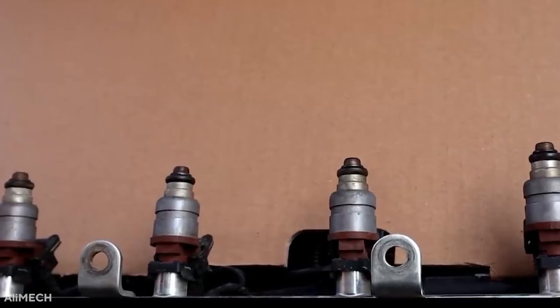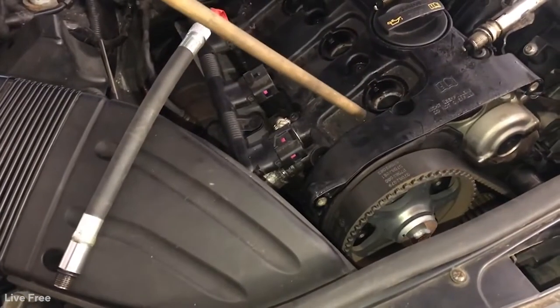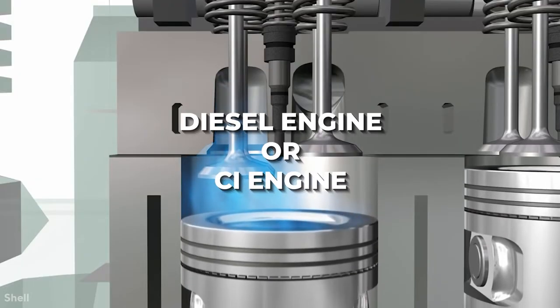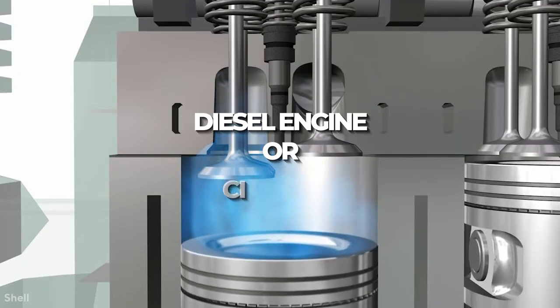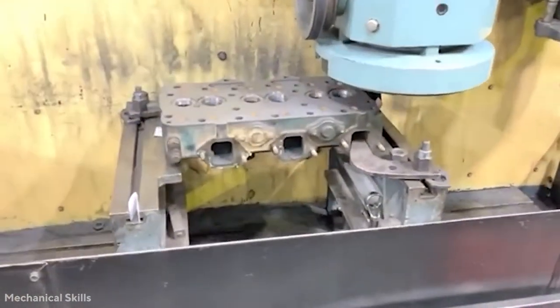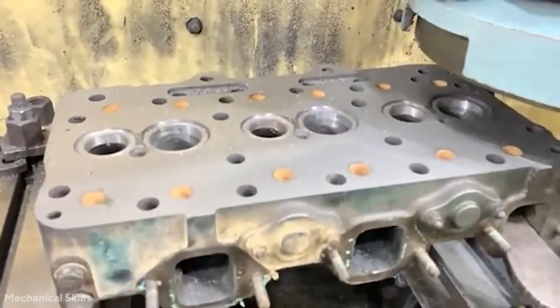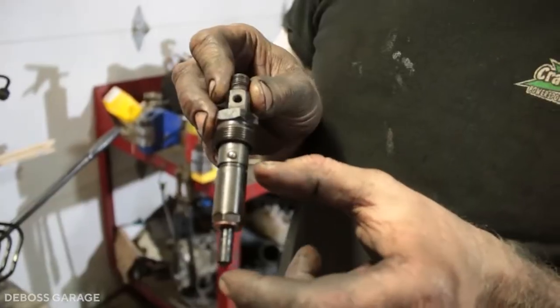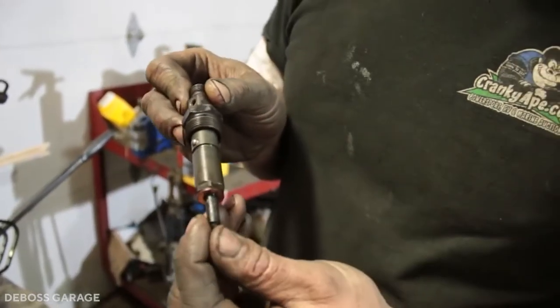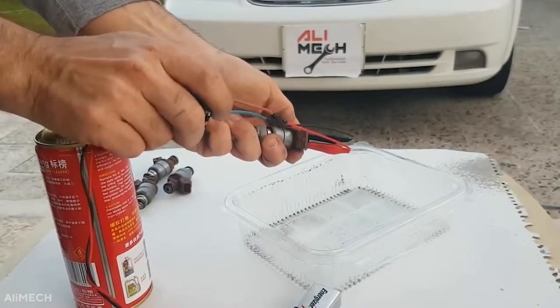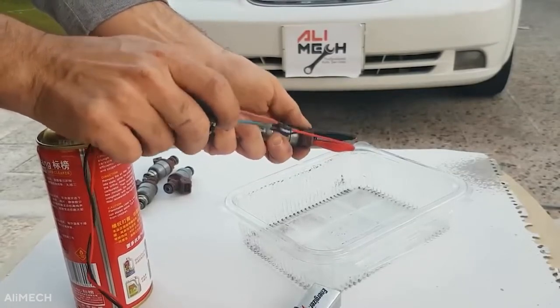Number 9: Fuel Atomizer or Injector. At the end of the compression stroke, fuel is injected via an injector and properly atomized into fine droplets. During the suction stroke of a diesel engine or CI engine, only air is drawn into the cylinder and compressed to extremely high pressure. Because compression raises the temperature and pressure of the air to the levels required for fuel ignition, fuel is broken down into a fine spray of very small droplets during the injection process.